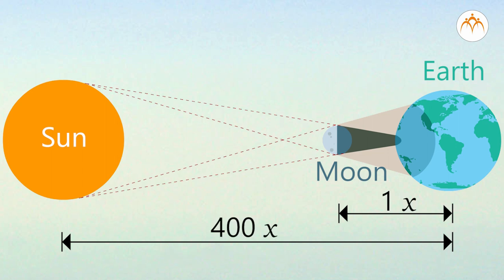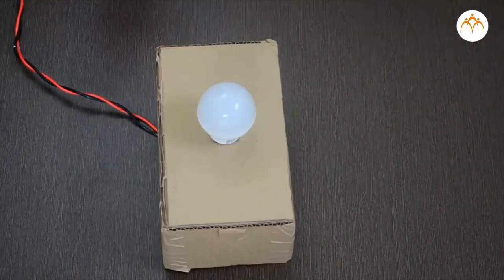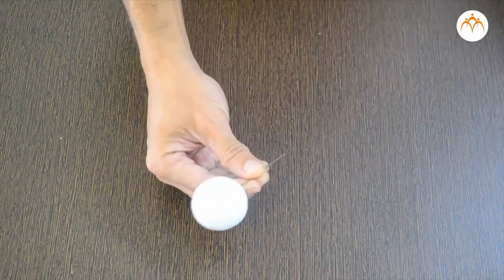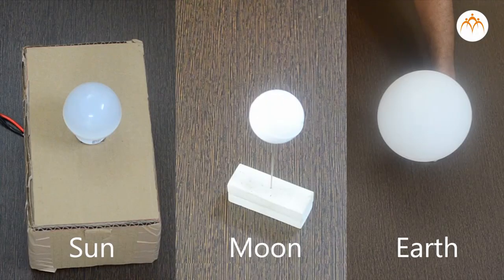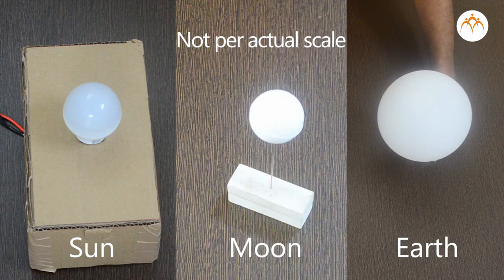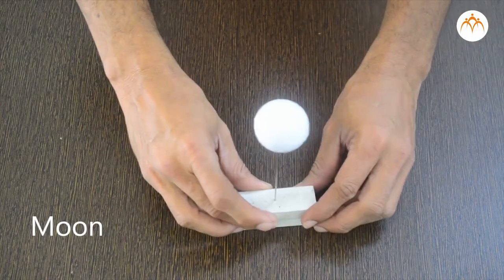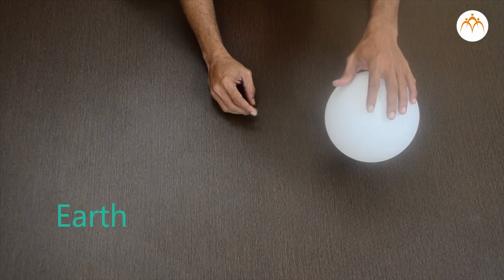We will try to simulate this with the help of a bulb, a plastic ball, and a balloon. These objects are not as per the actual scale, but it will help us to understand the phenomenon. The bulb represents the light source, that is sun. Small ball represents moon, and balloon is our earth.